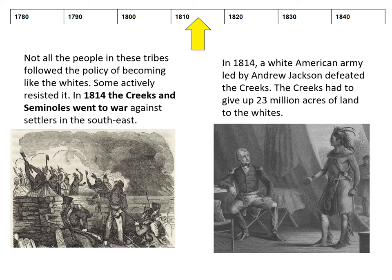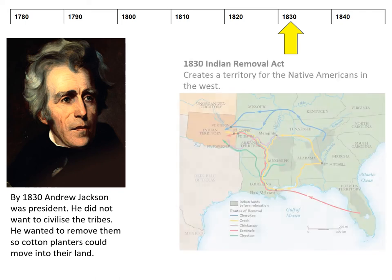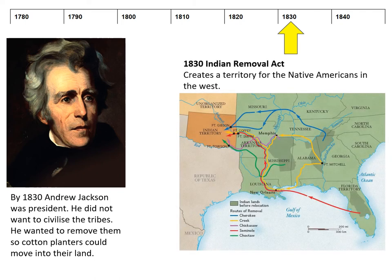So the US government was systematically removing the Native Americans through a policy of civilizing and through war. This brings us to 1830, when Andrew Jackson became president. Andrew Jackson didn't want to civilize the Native American tribes — he wanted to remove them completely so cotton planters could move into their land. In 1830 he got Congress to pass the Indian Removal Act, which said they were going to remove those five Native American tribes completely from the southeast.